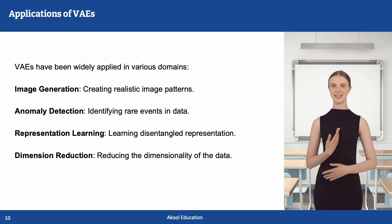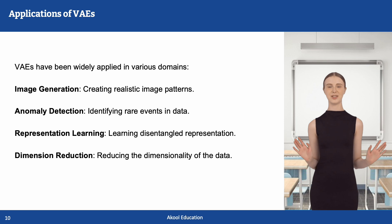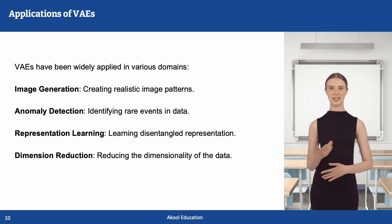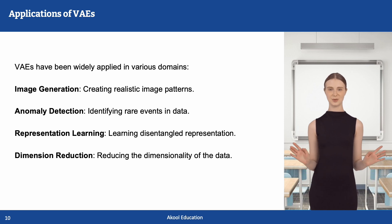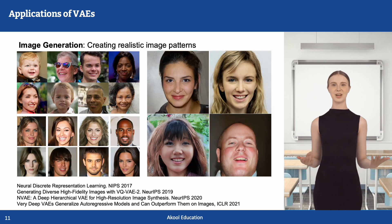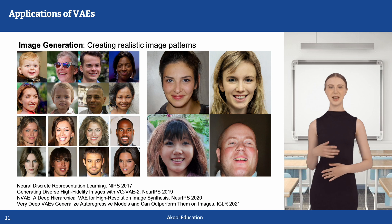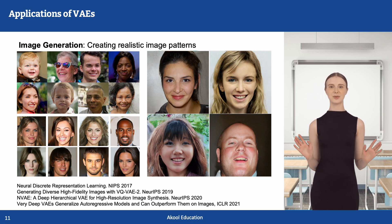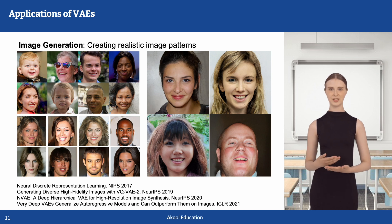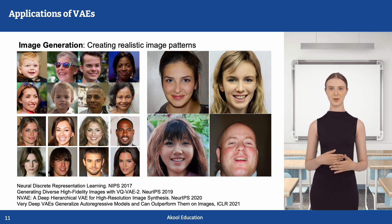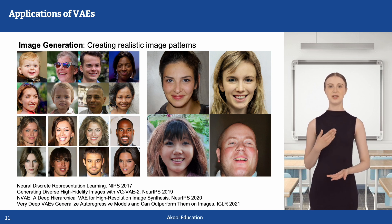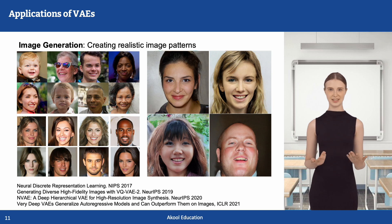Variational autoencoders have found extensive applications across diverse domains, including image generation, anomaly detection, representation learning, and dimensionality reduction. Unlike generative adversarial networks, which can suffer from mode collapse, variational autoencoders offer a more probabilistic and structured approach to generating diverse images. Recent advancements have significantly improved their performance, making them competitive with GANs. For example, the VQVAE learns a discrete latent representation by incorporating ideas from vector quantization and pairs these representations with an autoregressive prior, enabling high-quality image generation. Additionally, hierarchical and very deep architectures have been designed for VAEs to further enhance performance.